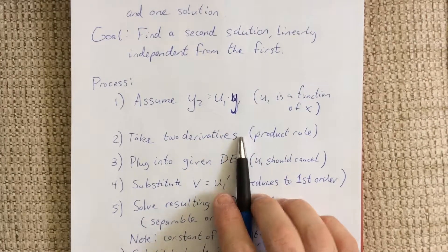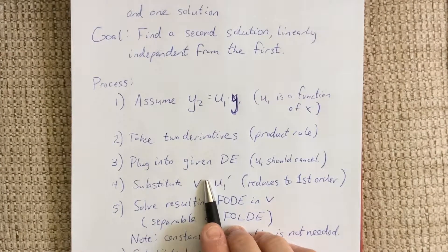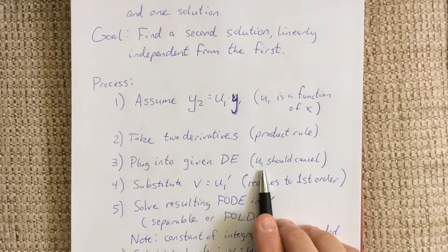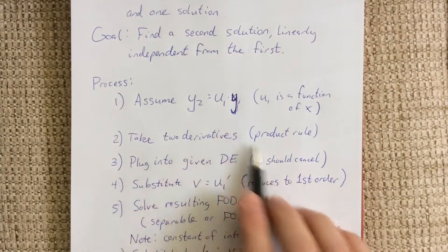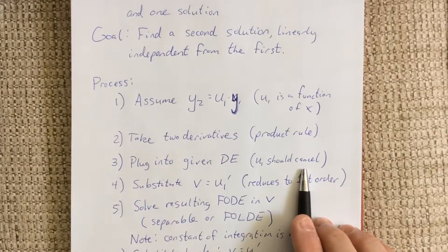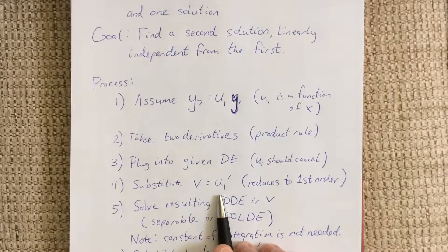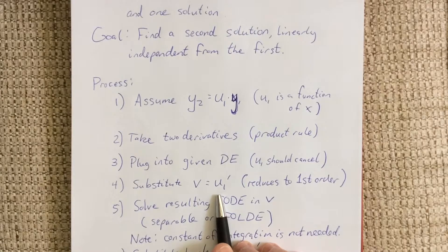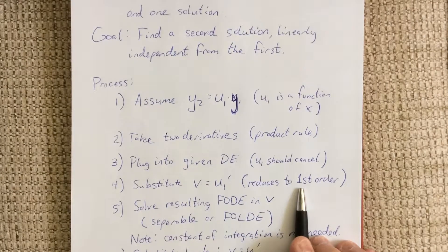What we're going to do is take those two derivatives, as well as the original function, and plug it into the given differential equation. What we should see is that any term that contains just a u1 — no u1 primes, no u1 double primes — anything with just a u1 should cancel out, given that y1 was a solution of the homogeneous differential equation. We'll see that momentarily. Next, we're going to substitute v is equal to u1 prime. What this does is quite literally what the technique is called — it reduces this from a second-order differential equation to a first-order differential equation in terms of v. We'll demonstrate that shortly.